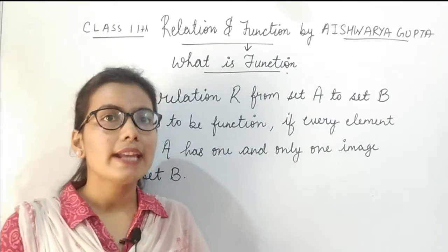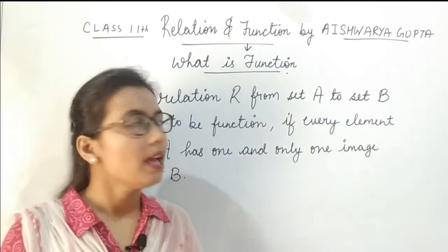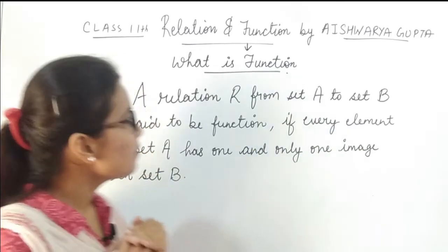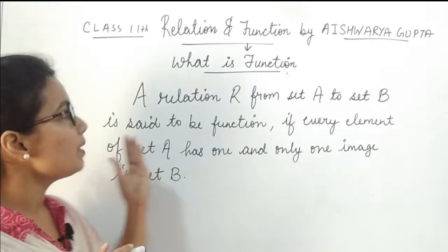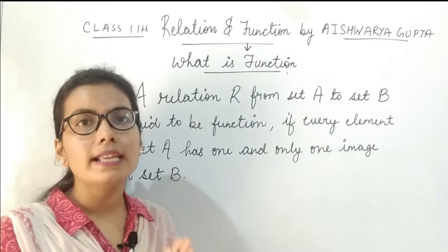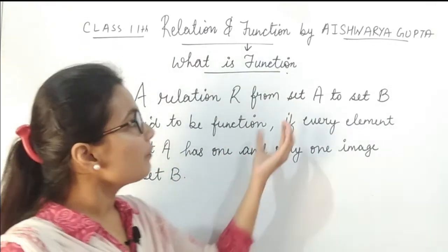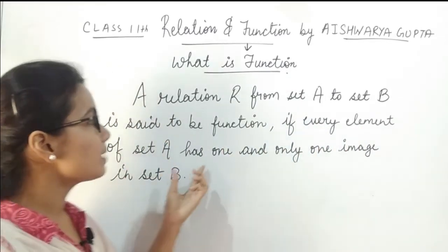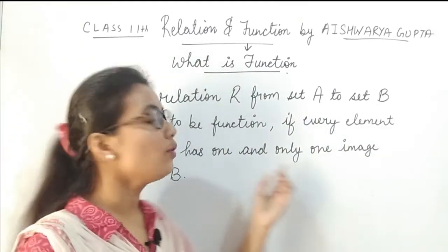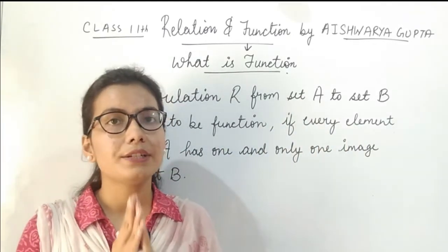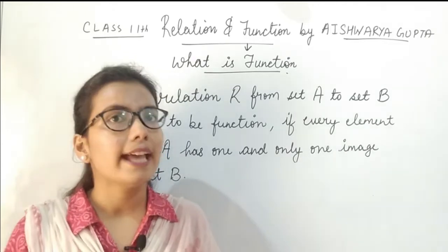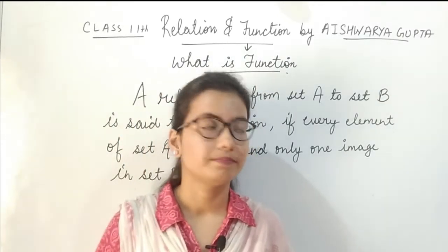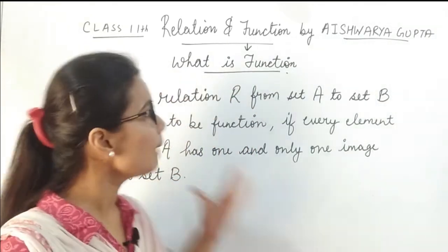A function is already a relation. A relation from set A to set B is said to be a function if every element of set A has one and only one image in set B. Only then is a relation said to be a function.